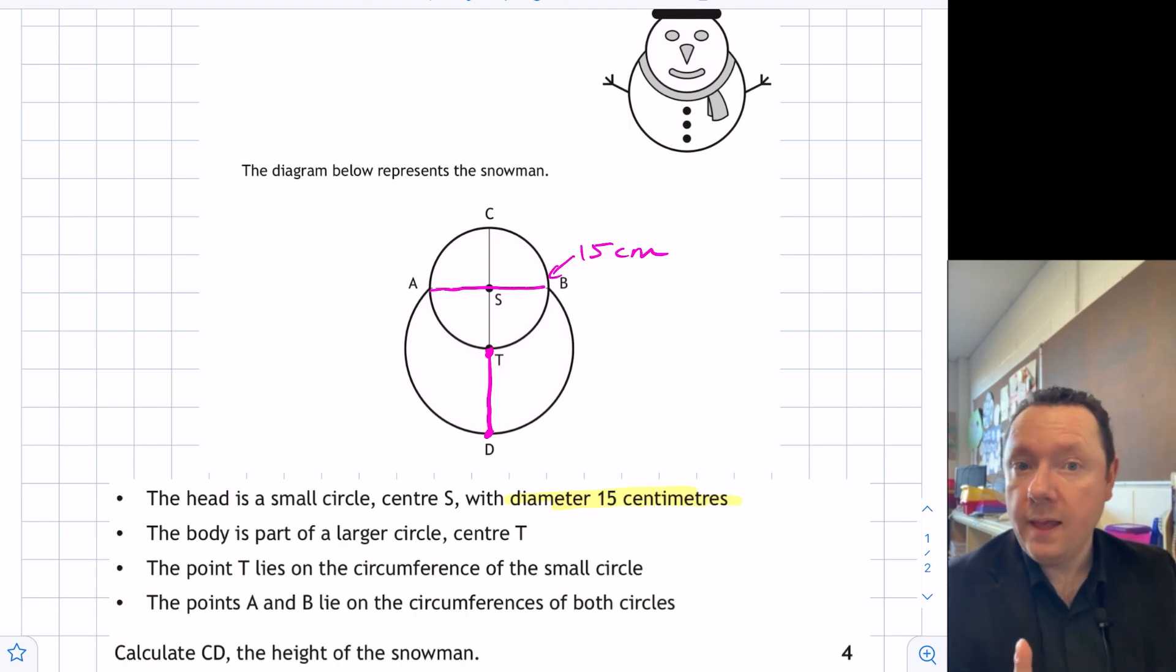But what I do know, if you think about it, is it's a radius of the bigger circle. So that's a radius. So could I draw maybe another line that's a radius and work it out instead? Well, if I go from here to here, that's also a radius. Let's call that R. It's the same radius. I can make a right-angled triangle.